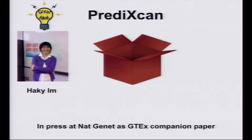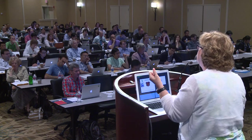Instead of testing individual SNPs and asking after the fact whether they are regulatory, let's aggregate those variants into SNP-based predictors of transcript levels and then test these predicted transcript levels directly for association with disease or relevant quantitative traits. This is the brainchild of a talented young faculty member at the University of Chicago. The manuscript describing the method and initial applications is in press in Nature Genetics as a GTEx companion paper.